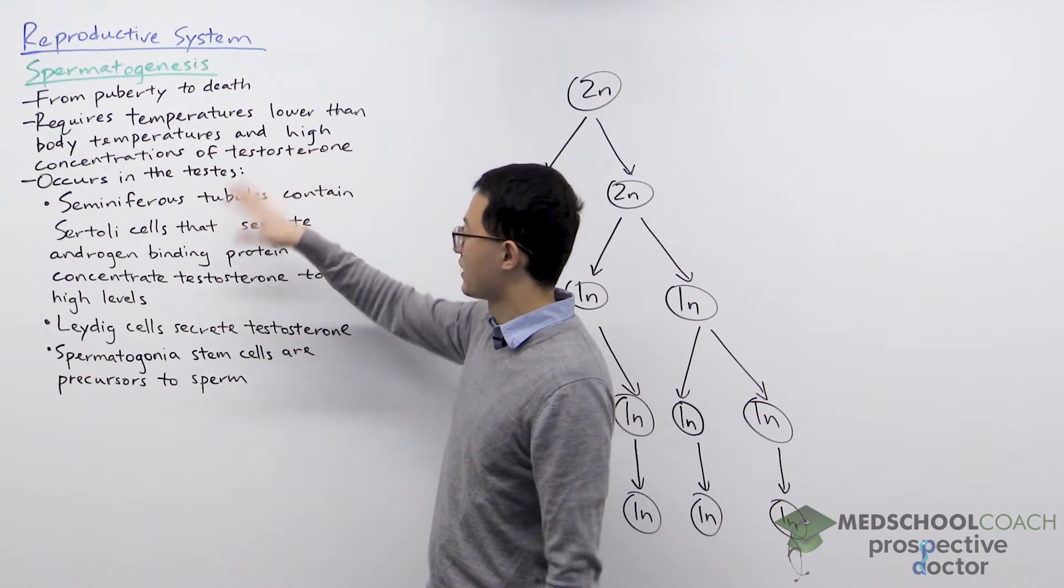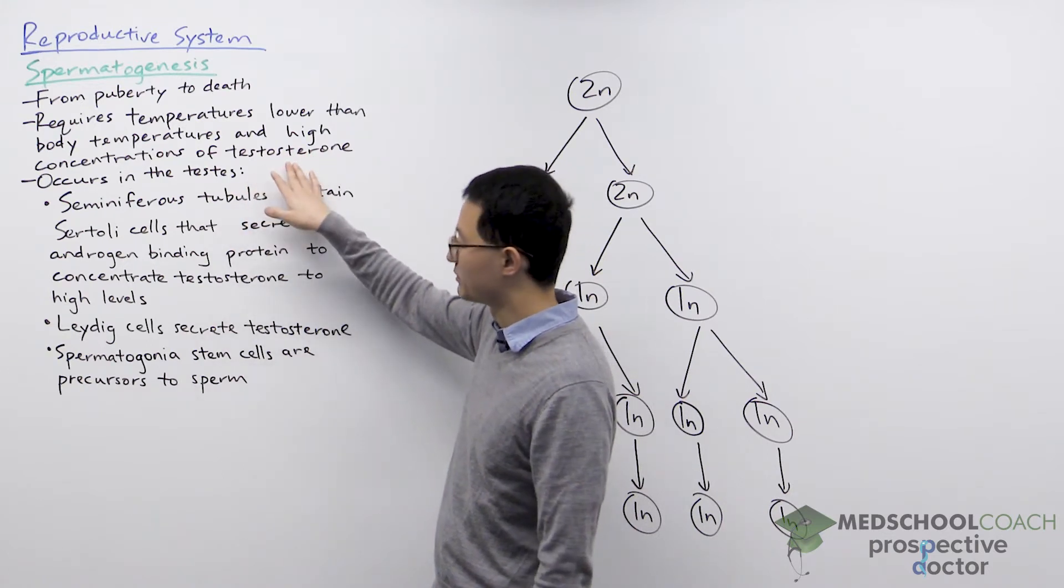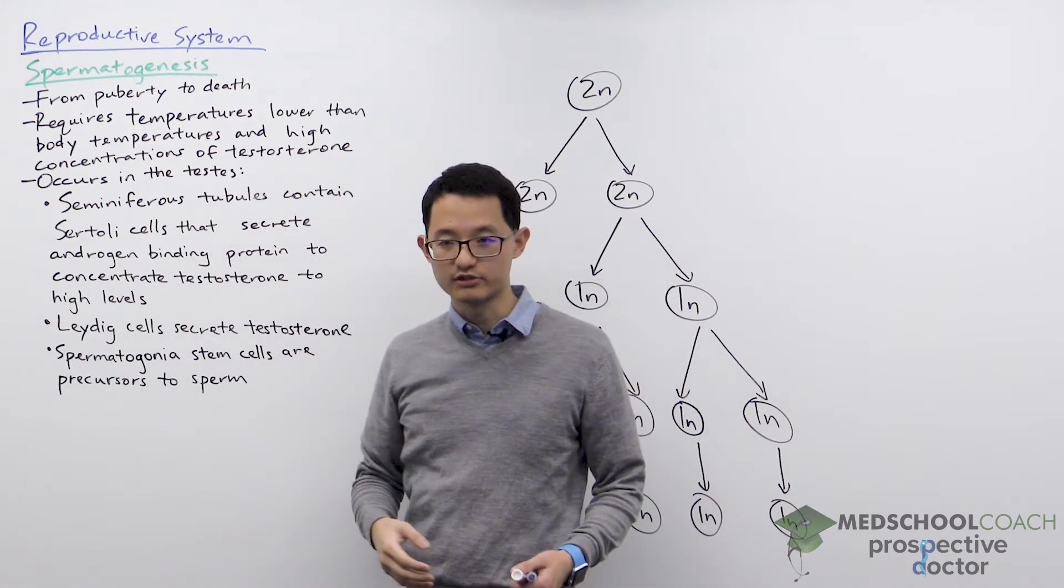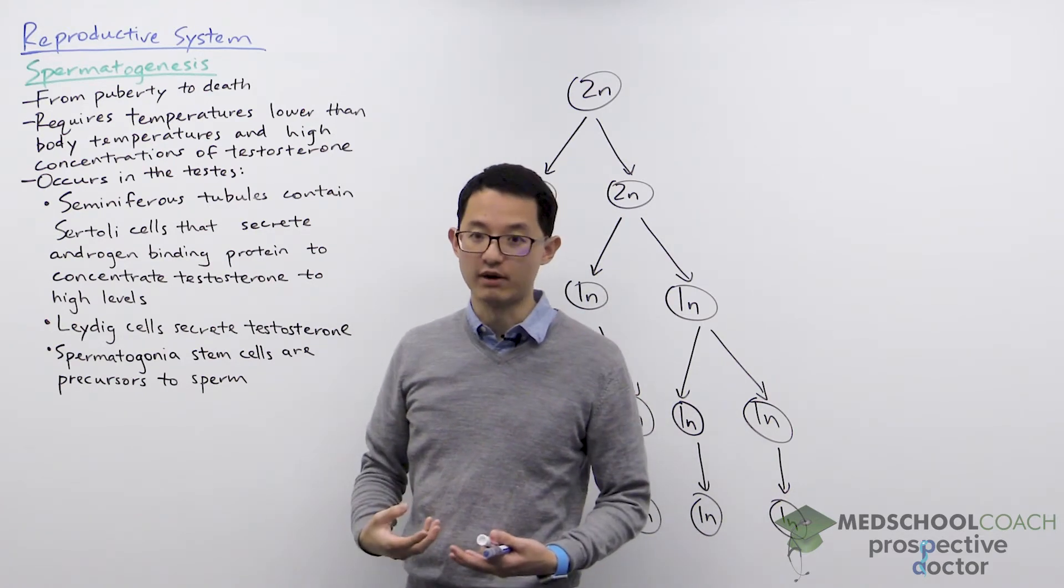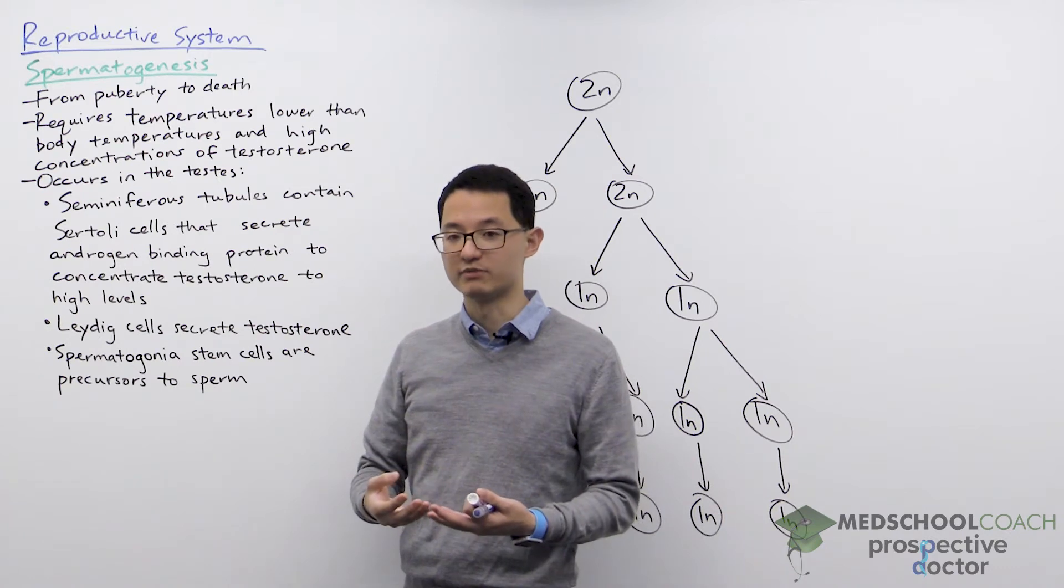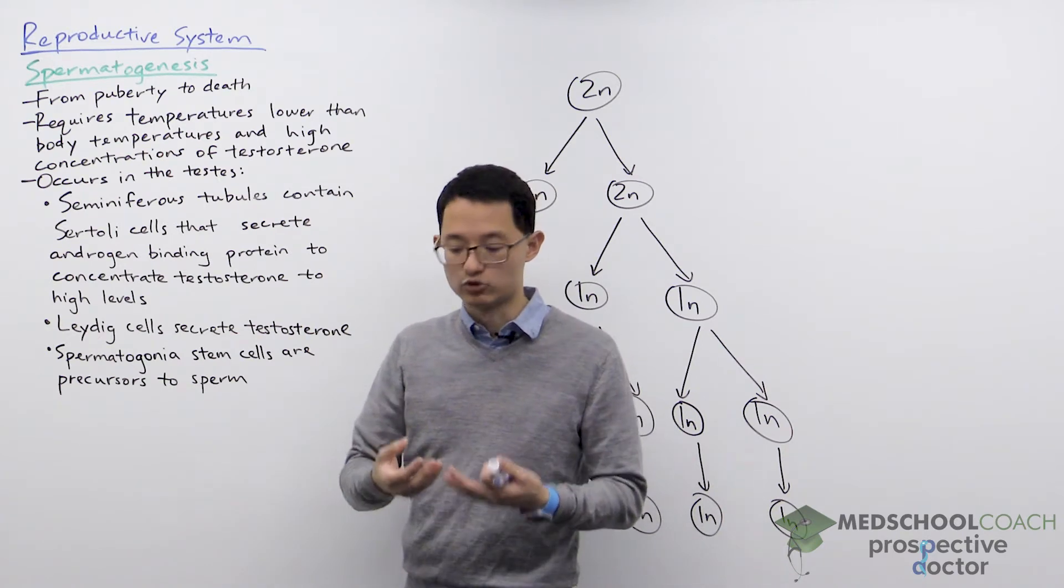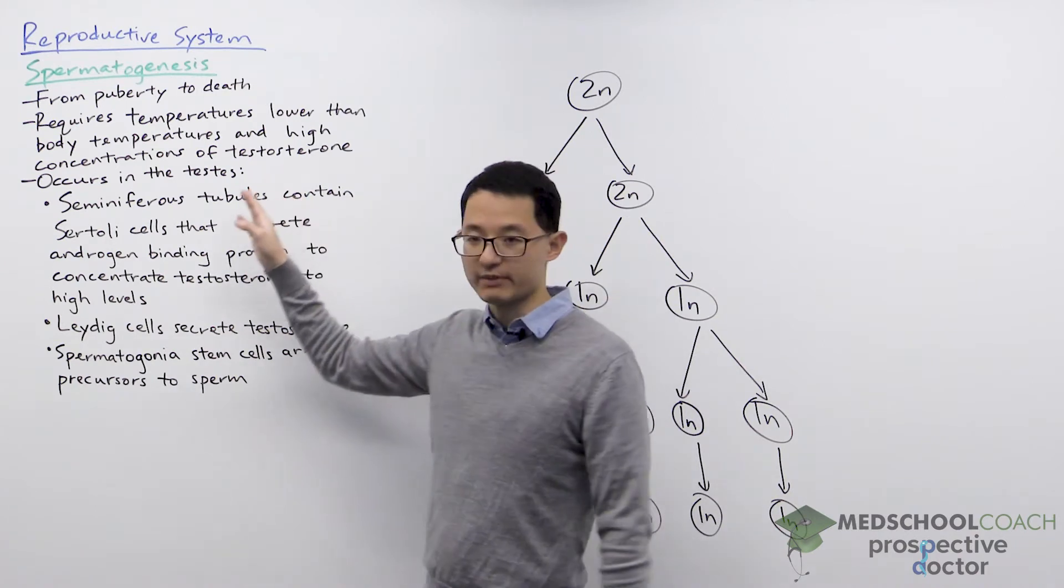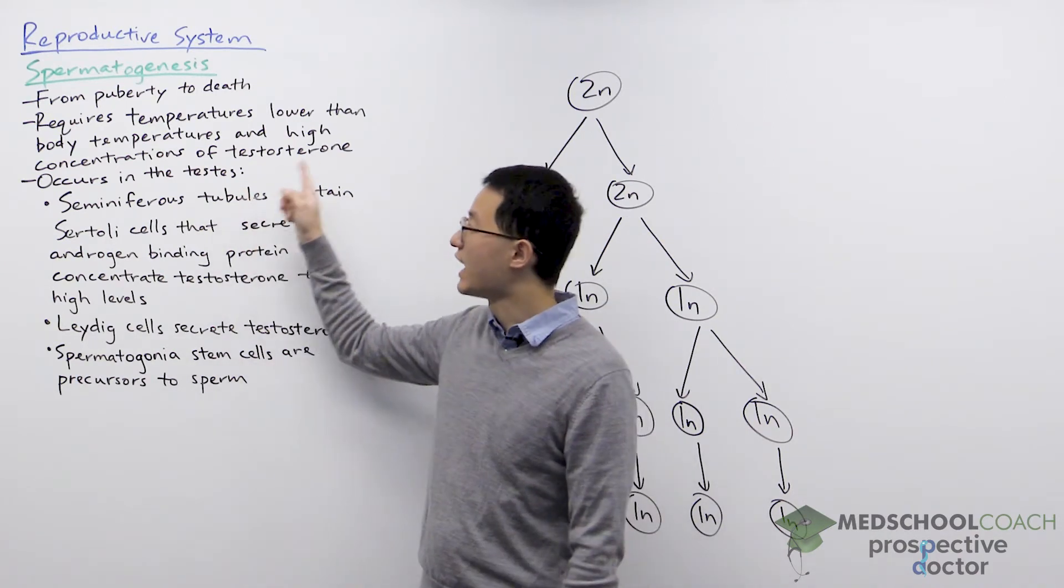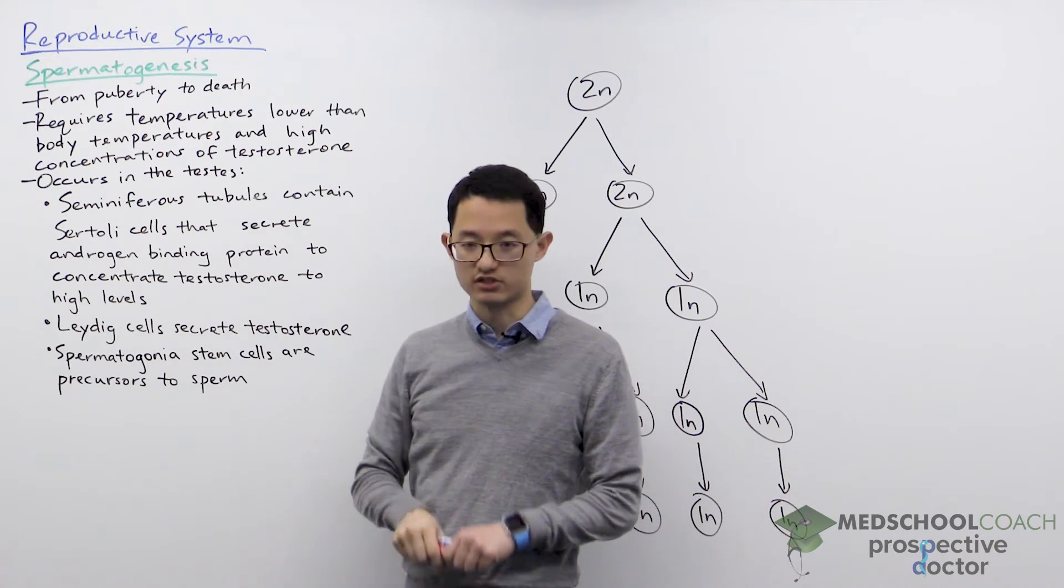The process of forming sperm requires temperatures lower than body temperatures. That's why the scrotum and testicles are not located directly inside the body, and the scrotum also has the ability to rise or drop depending on the temperature. The second requirement is that spermatogenesis requires high concentrations of testosterone.